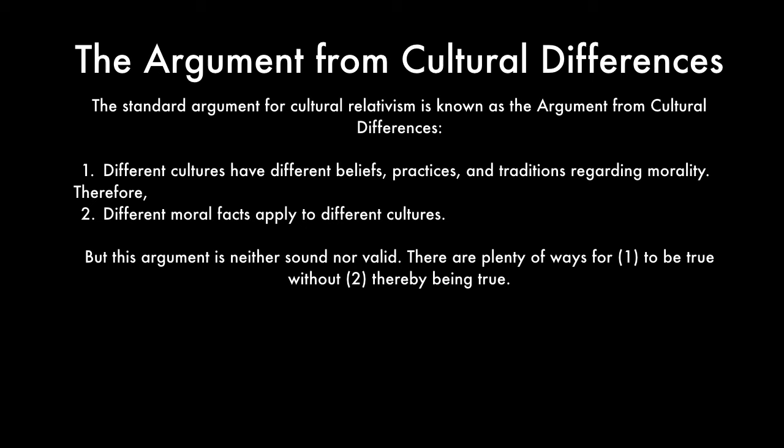There are many ways for the premise to be true without the conclusion thereby being true. One possibility is that all cultures are wrong about morality—that wouldn't mean different moral facts apply to different cultures, just that everyone has different false beliefs. Or maybe different cultures have different beliefs and practices, and some are more right than others. This doesn't say cultural moral relativism is false, but it does say the central argument in its favor isn't a good one.